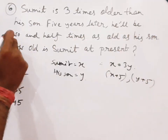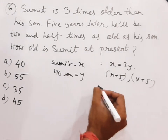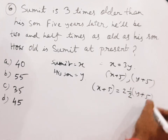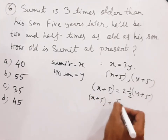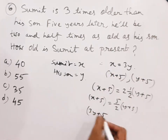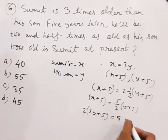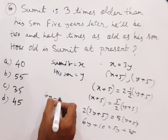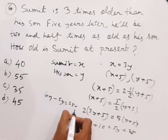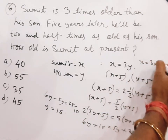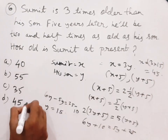The question states that 5 years later x plus 5 equals 2 and a half times (y plus 5), which means x plus 5 equals (5/2)(y plus 5). Substituting x equals 3y gives 3y plus 5 equals (5y plus 25)/2, so 6y plus 10 equals 5y plus 25. Therefore y equals 15, and Sumit's age x equals 3 × 15 equals 45. So 45 is the answer.